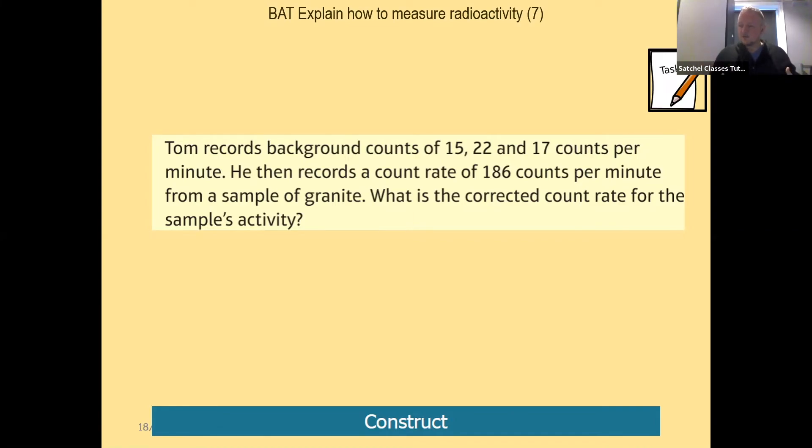If it's present at all times, then it makes sense to realize that the count rate for the sample also includes our background count rate. So to find the true or corrected count rate just from the sample, we have to take away the background from the sample rate.